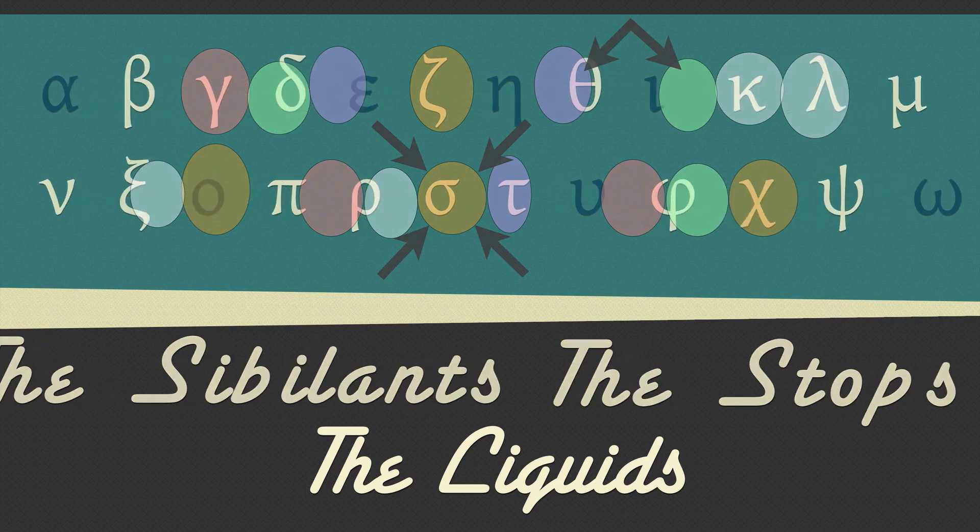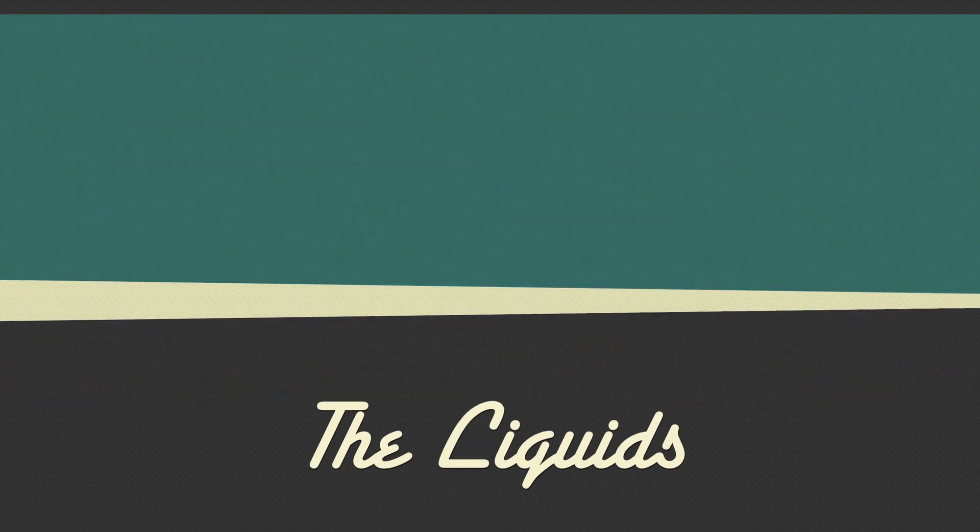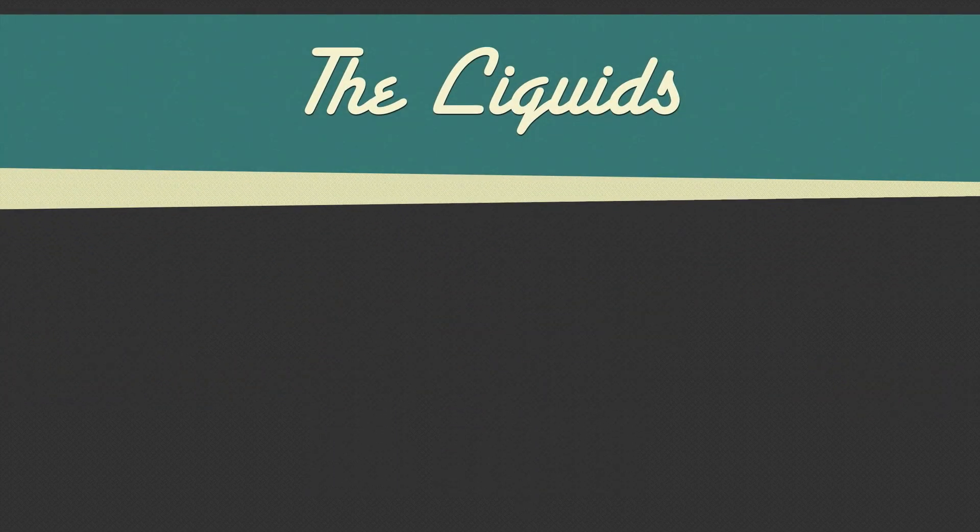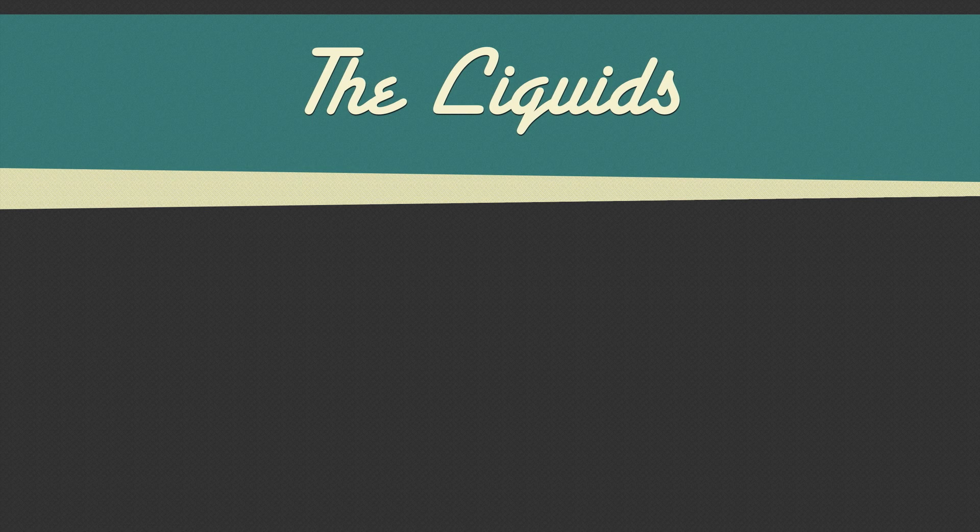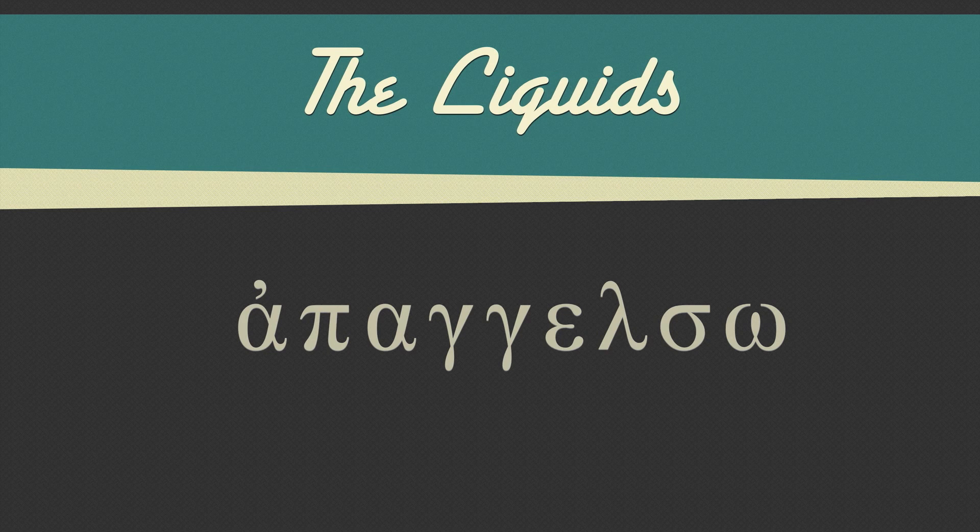First, let's talk about words that end with a liquid letter. As you know, like English, Greek can add things to the beginning or ending of word stems. If a word ends with a liquid letter and a sigma is added to the end, the sigma disappears. Think of it this way. The sigma slips on the liquid.